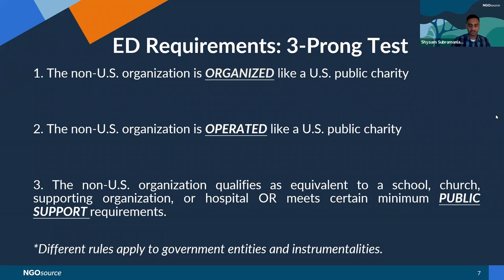Second, we'll look to see whether the non-U.S. organization is operated like a U.S. public charity — this is about what the organization does in practice. In the first part of the analysis we're looking at what it is permitted to do, then we look at what it does in practice. Finally, most organizations will have to meet certain public support requirements. We'll review their financial information for a specified five-year period and determine whether they're publicly supported. Organizations may be able to qualify as a school, a church, a supporting organization, or a hospital — in which case they would not need to submit detailed financial information, but this is not typical.